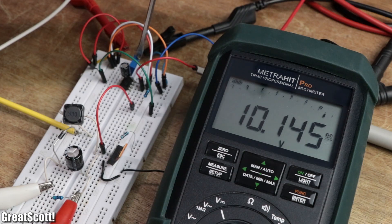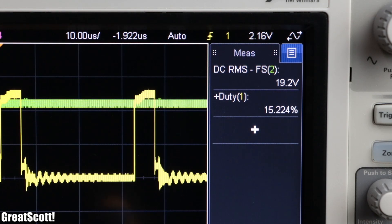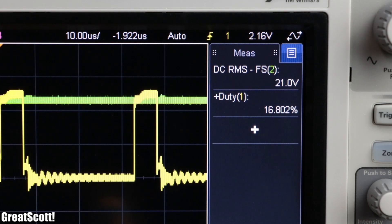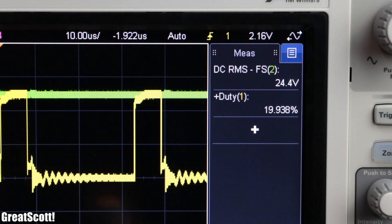So it is in buck mode. But once we use a duty cycle above 9%, the energy of the coil is enough to reach a higher output voltage than the input voltage, so it is in boost mode.